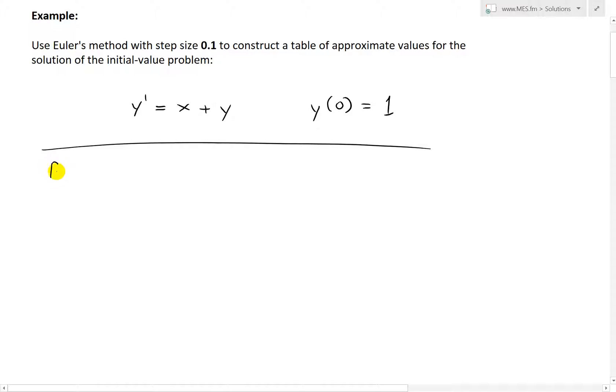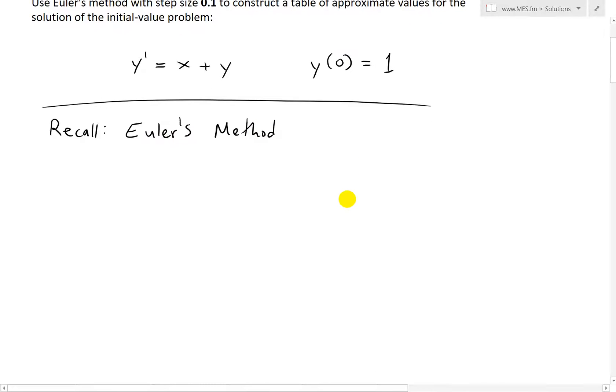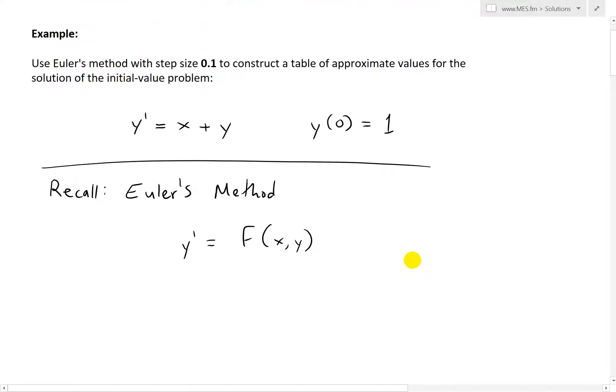So in solving this, let's just recall Euler's method from my last video. Make sure to watch it. It was a pretty interesting video on it, very useful. So Euler's method, the basic idea is if you have a differential equation of the form Y prime is equal to F of X, Y.